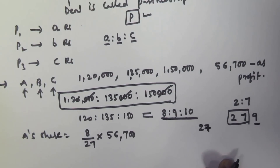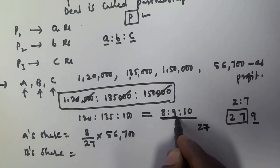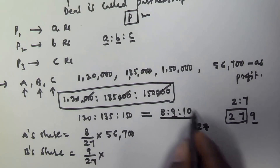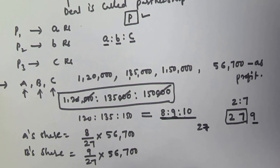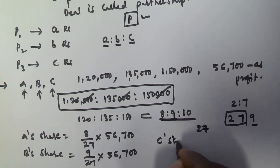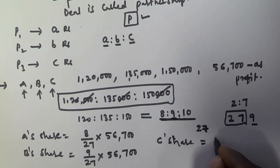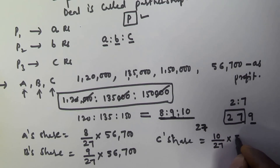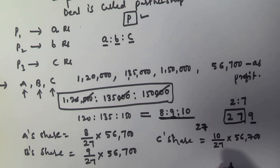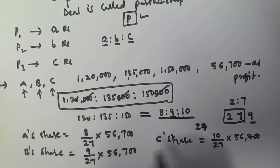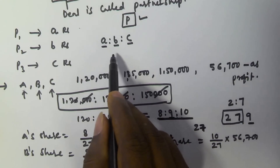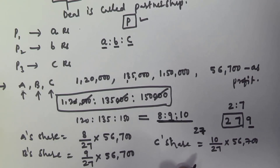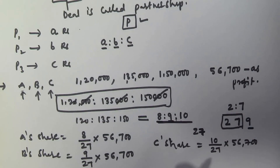B's share is 9 parts out of 27, so B's share = (9/27) × 56,700. C's share is 10 parts out of 27, so C's share = (10/27) × 56,700. Solve these calculations to get the individual shares of A, B, and C. Remember: if partners invest for the same amount of time, the profit or loss is distributed in the ratio of their investments.